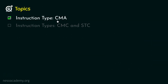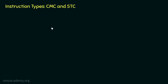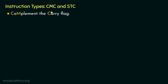That is all about the instruction type CMA — a 1-byte-long instruction. Let's now focus on the next instruction types CMC and STC. The reason we learn about these two together is that both instructions operate on the carry flag. Coming to CMC, it stands for complement the carry flag. The letters C and M come from 'complement' and the last C comes from the carry flag. CMC also falls under the 1-byte-long instructions category.